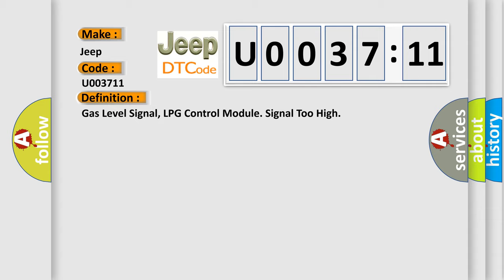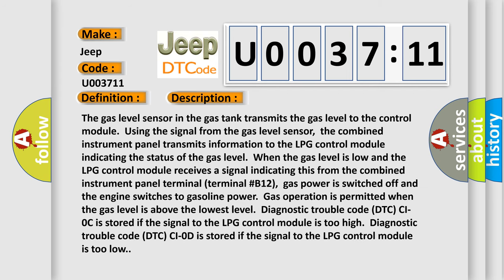And now this is a short description of this DTC code. The gas level sensor in the gas tank transmits the gas level to the control module. The combined instrument panel transmits information to the LPG control module indicating the status of the gas level. When the gas level is low and the LPG control module receives a signal indicating this from the combined instrument panel terminal B12, gas power is switched off and the engine switches to gasoline power. Gas operation is permitted when the gas level is above the lowest level. Diagnostic trouble code DTC CIOC is stored if the signal to the LPG control module is too high or too low.